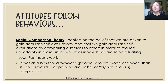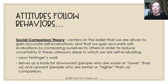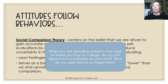The social comparison theory centers on the belief that we're driven to gain accurate self-evaluations by comparing ourselves to others in order to reduce uncertainty. Based on Leon Festinger's work, this serves as a basis for downward comparison — comparing ourselves to people who are worse off — and upward comparison — people who are better off. When deciding where to find a job or go to college, you're probably going to ask a variety of people, not just your peers.